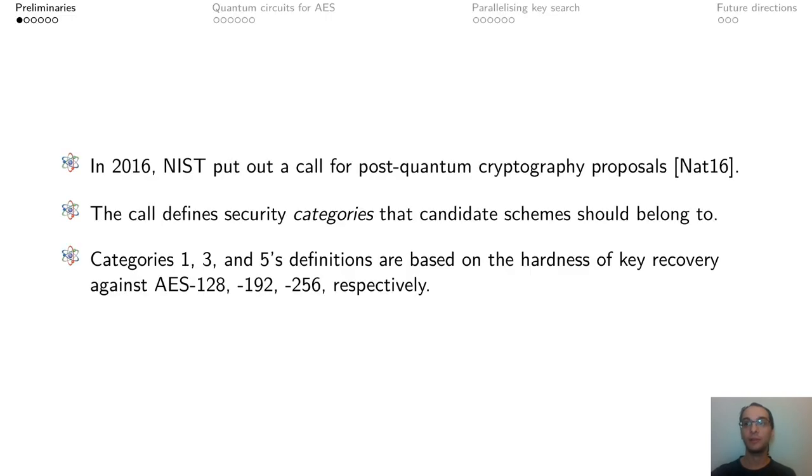As many of us know, in 2016 the National Institute for Standards and Technologies put out a call to standardize post-quantum cryptography. In this call, they defined five categories specifying the security of a scheme. Categories 1, 3, and 5 are defined based on the hardness to run key search against AES 128, 192, and 256.